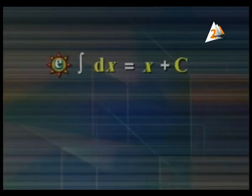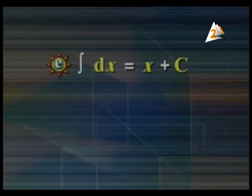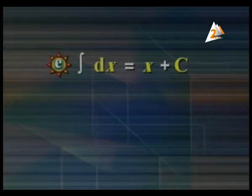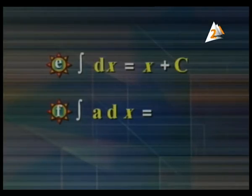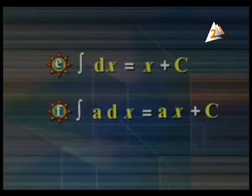Number (e): what is the integration of dx? dx means 1, or x^0. We add 1 to the power: x^1 over 1, so the integration of dx equals x plus c. Remember, integration of dx means integration of x^0 or integration of 1 dx. Number (f): integration of a dx — a is a constant, so the answer is ax plus c.